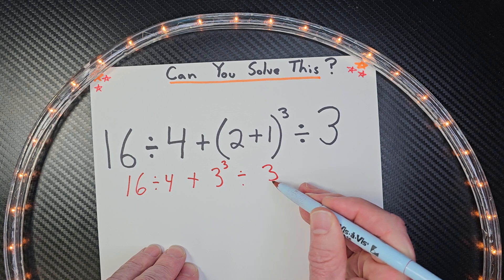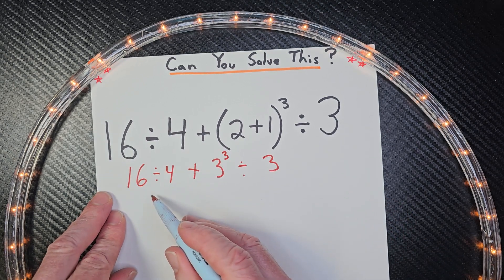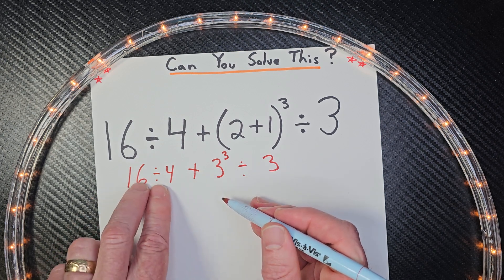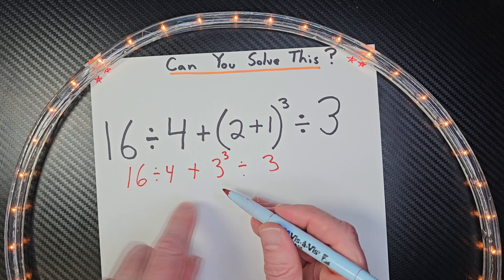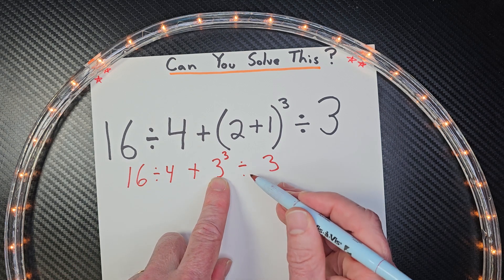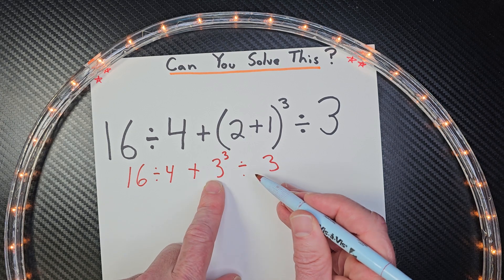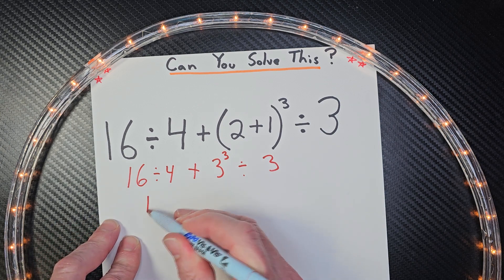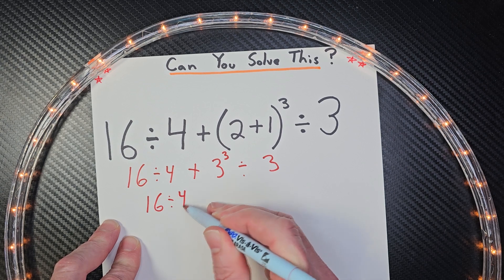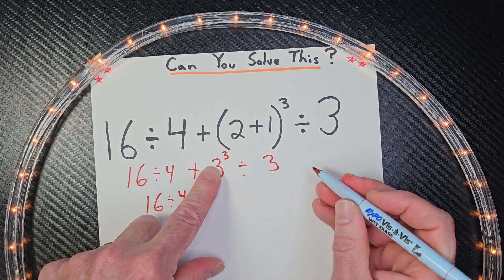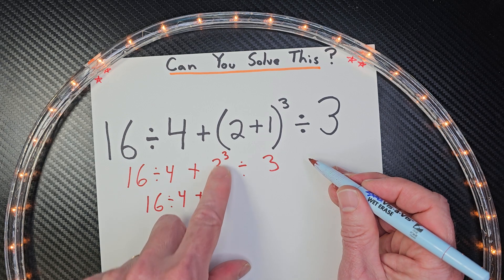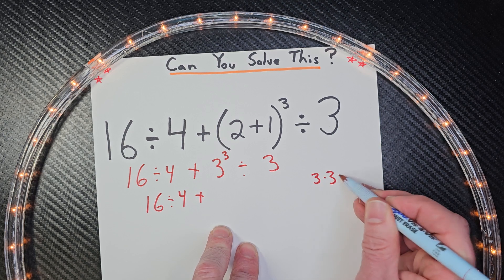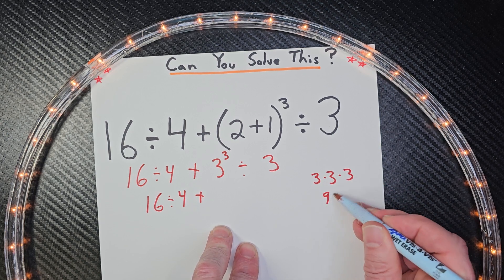All right, so we start again — we've got to do the exponent first. Later on you might be able to do 16 divided by 4 and the exponent at the same time, but I want to keep consistent today. So rewriting: 16 divided by 4, plus 3 to the third power. Remember, exponents mean multiplying that base by itself — so 3 to the third is 3 times 3 times 3. That gives us 9 times 3, which equals 27.